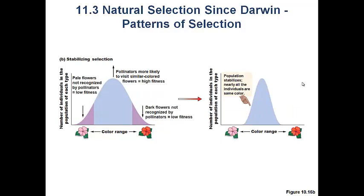Stabilizing selection occurs when the intermediate phenotype is selected for. Continuing our example, neither the pink flower nor the red flower is selected for, but the intermediate light red flower is. The histogram narrows — most flowers are intermediate and fewer are at the extremes. A classic example of stabilizing selection is birth weight in animals or humans: a very small offspring has a survival disadvantage, and a very large offspring has trouble being born, so the intermediate phenotype is selected for.